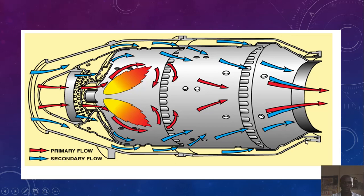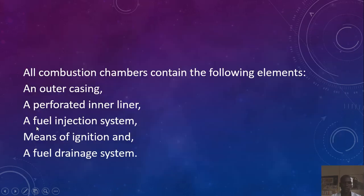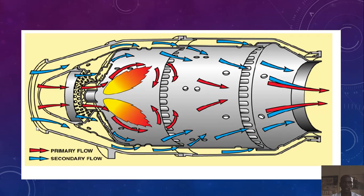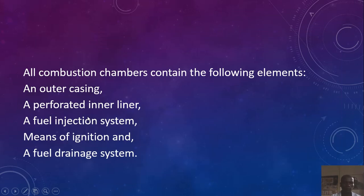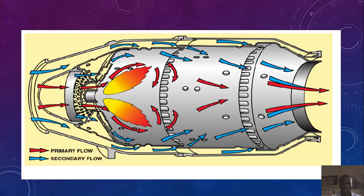The outer casing is visible here. We also see the perforated inner liner, then the fuel injection system by which the fuel is introduced, then the means of ignition, then the draining system — where excess fuel is drained out, because it cannot stay in the combustion chamber as it would cause dangerous effects, which we shall see in future.